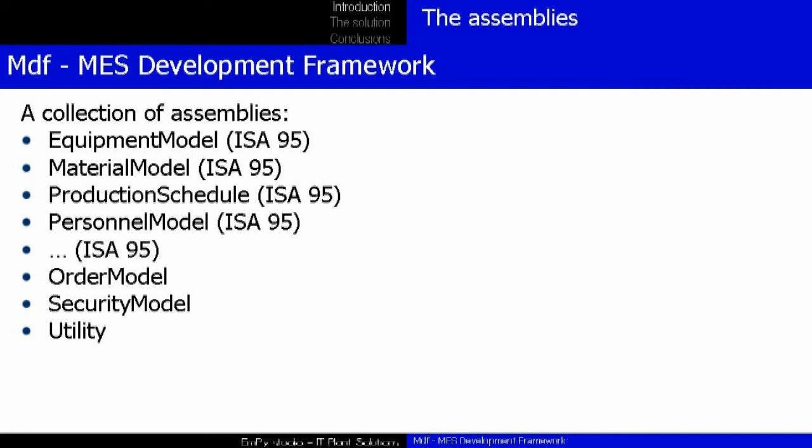In this example we are going to demonstrate the equipment model, which allows you to define the model of the plant; the material model, which allows you to manage all materials from raw materials to finished goods, lots, and handling units; the production schedule, which allows you to manage the process orders and scheduling; and the personnel model, which gives you an interface to manage personnel with specific skill sets in shop floor operations. We supply assemblies for every model described in the ISA-95 standard.